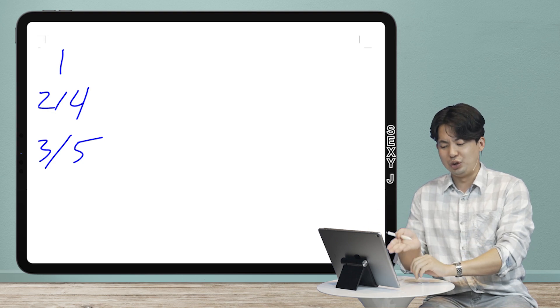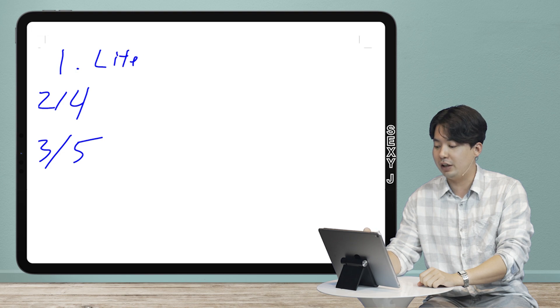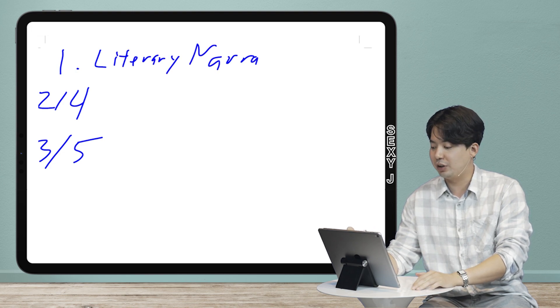So I wrote the numbers here, one, and then two, four, and three, five. Why? Because passage number one is always going to be the literary narrative. Okay, that's set in stone. That's just how it is.